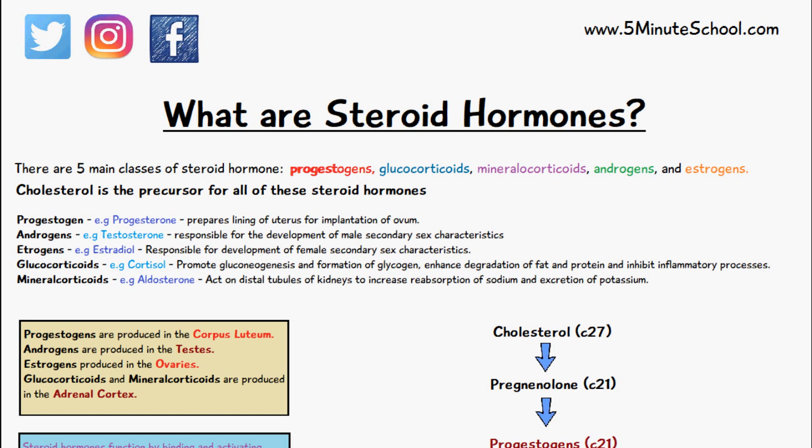These steroid hormones are all produced in different places in the body, but the precursor for all of them is cholesterol. Progestogens are produced in the corpus luteum, androgens are produced in the testes, estrogens are produced in the ovaries, and glucocorticoids and mineral corticoids are produced in the adrenal cortex.